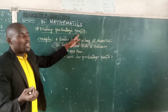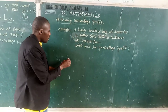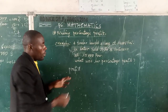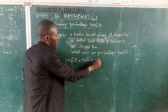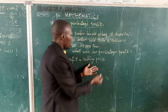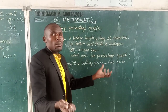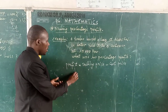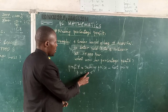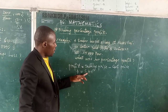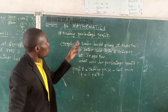By finding percentage profit, first of all, we are going to show how to find profit by using a formula. Profit is equal to selling price minus cost price. Cost price is like buying price. In short, we write P for profit, equal to SP (selling price) minus CP (cost price).